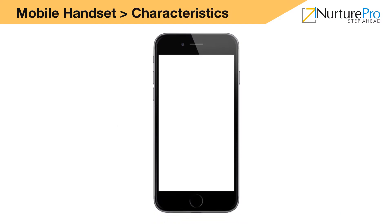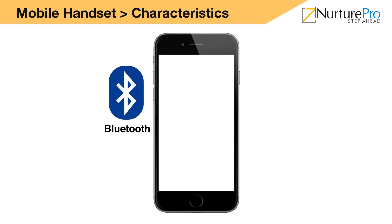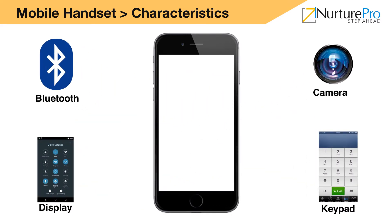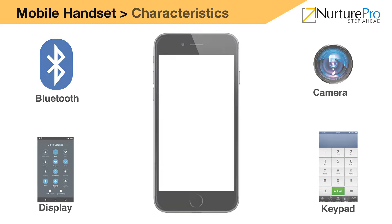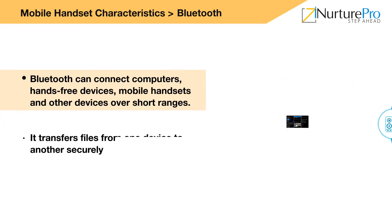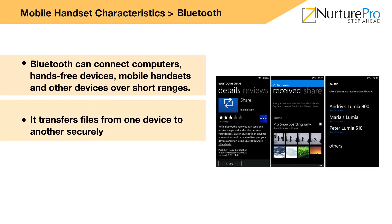A mobile handset consists of some basic characteristics. They are: Bluetooth, display, keypad, and camera. Let us look at each of them in detail. Today you cannot find any mobile handset without Bluetooth technology. Bluetooth is a wireless communication technology that connects computers, hands-free devices, mobile handsets, and other devices over short ranges. It is used for secured transfer of files from one device to another.